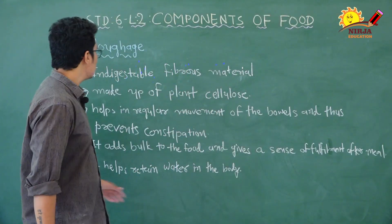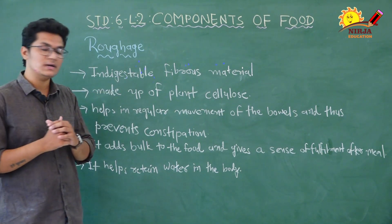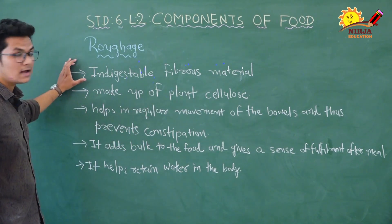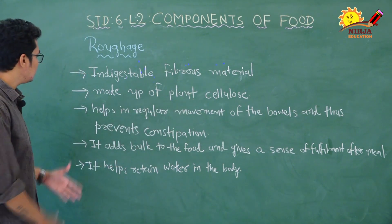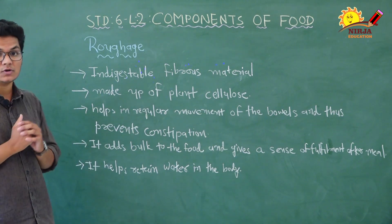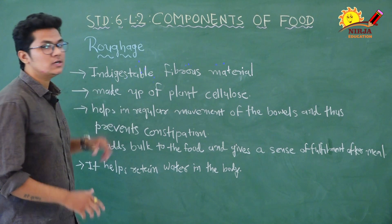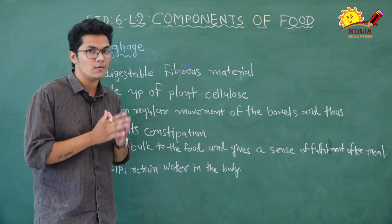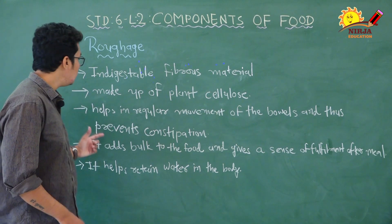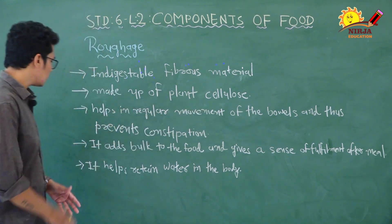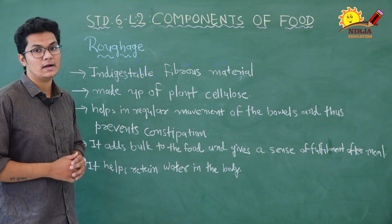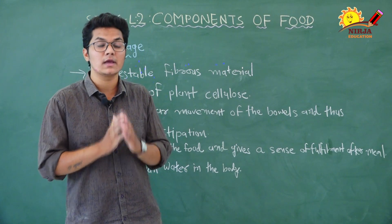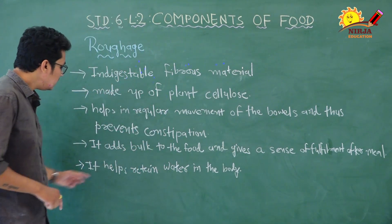Roughage is indigestible fibrous material made up of plant cellulose. We cannot digest plant cellulose, which is why roughage is not digestible. It helps in regular movement of the bowels and thus prevents constipation. Roughage has no nutritive value, but it helps prevent constipation and aids regular bowel movement. It adds bulk to food and gives a sense of fulfillment after eating. It also helps retain water in the body.